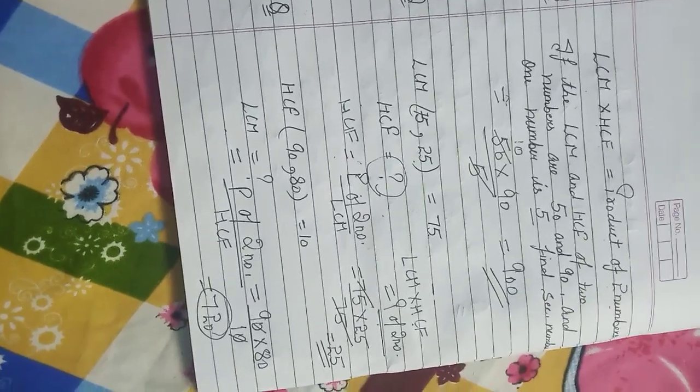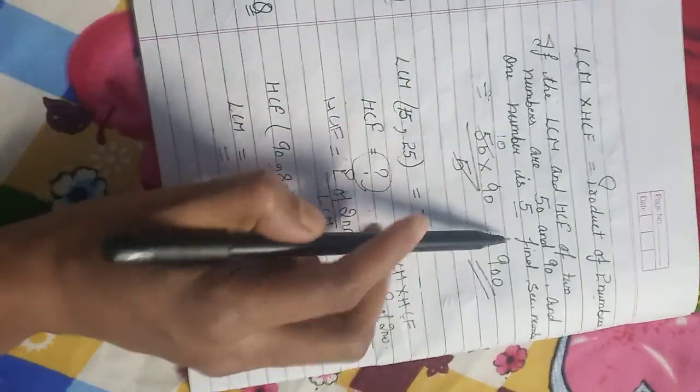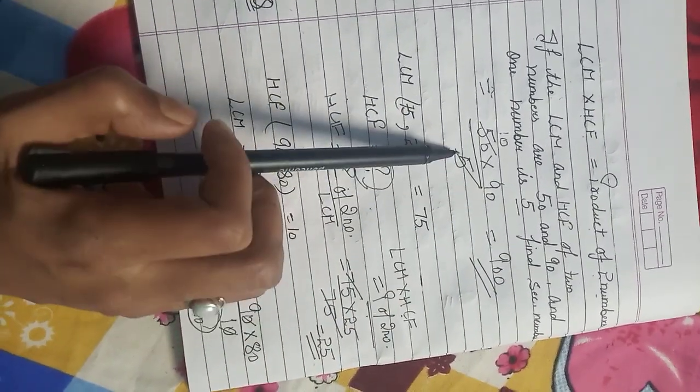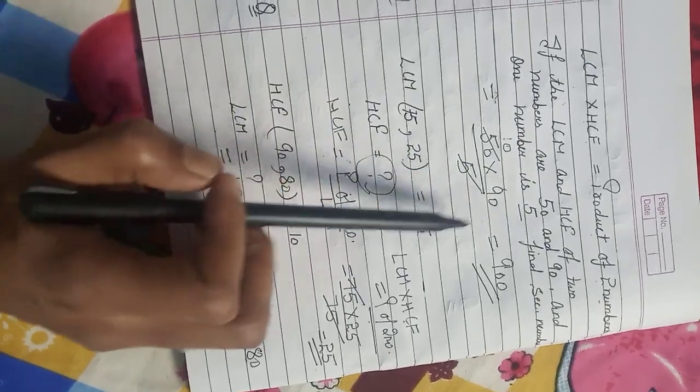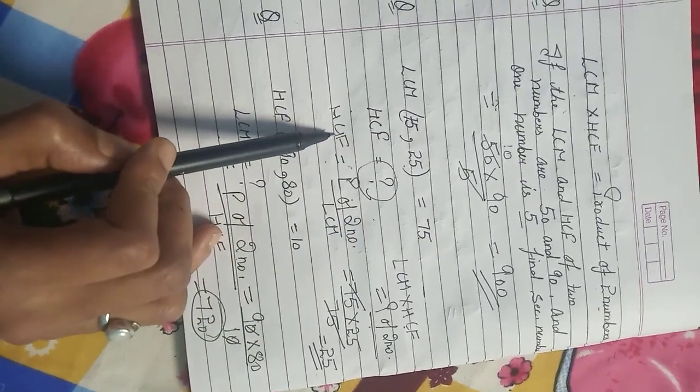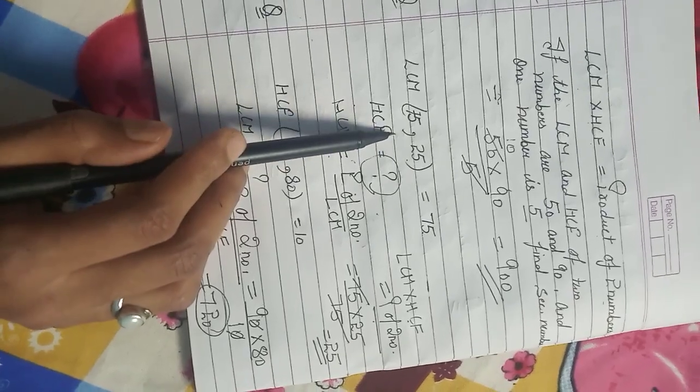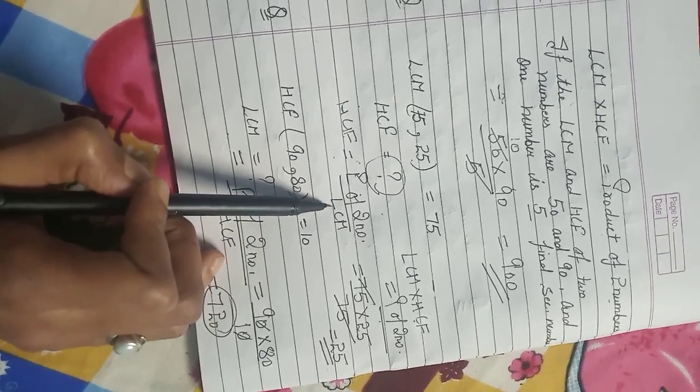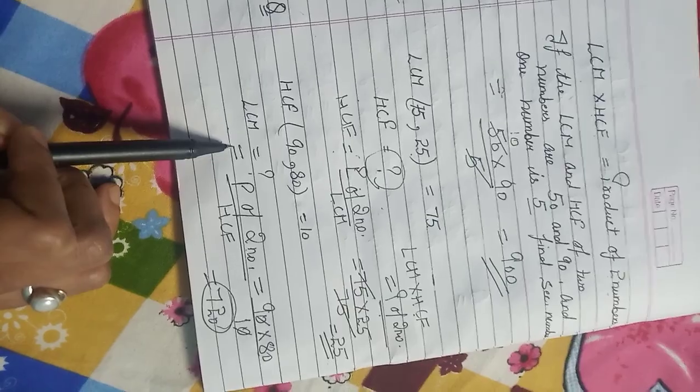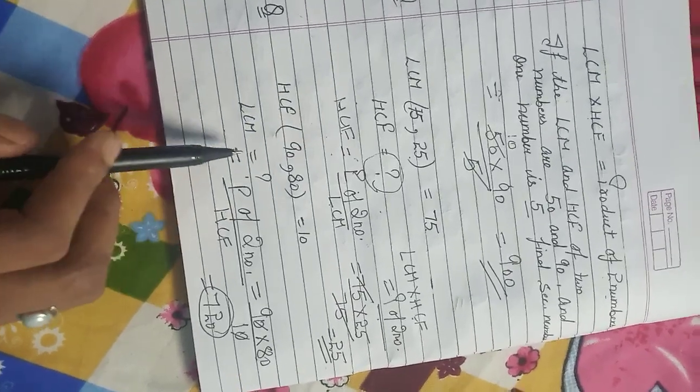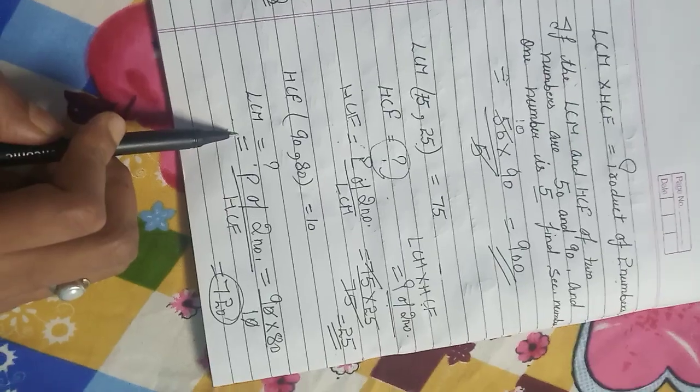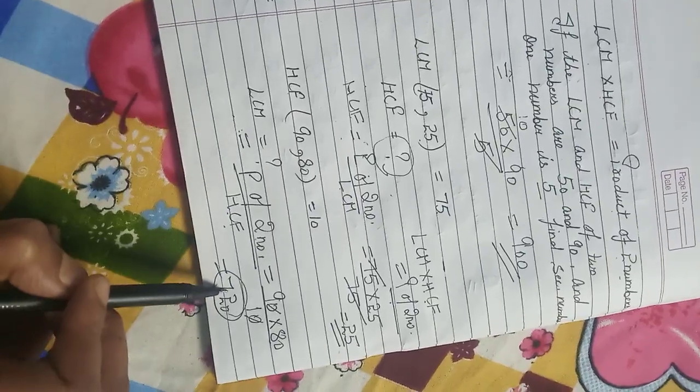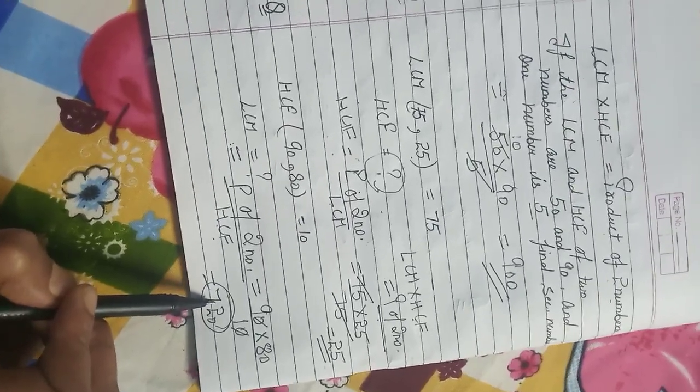So guys, if you have questions like this, remember the formula. If you need to find one number, do LCM into HCF divided by the given number. If you want to find HCF, use product of two numbers divided by LCM. And if you find LCM, at place of LCM put the value of HCF. Then you will get the LCM.